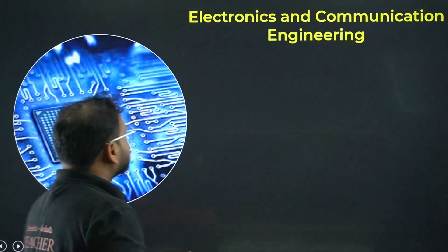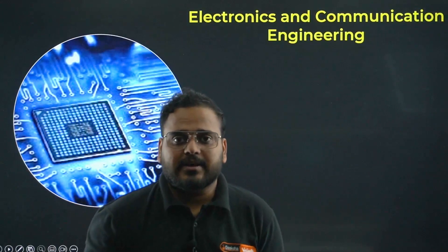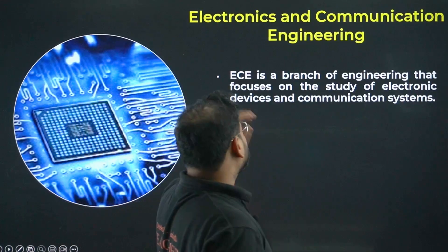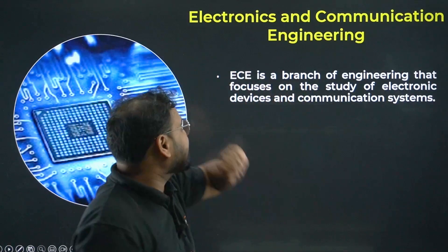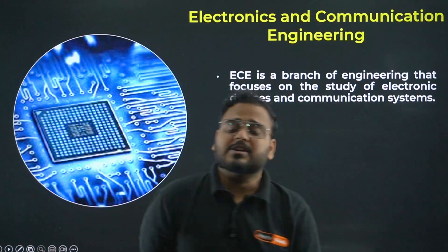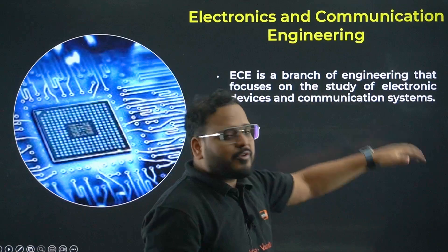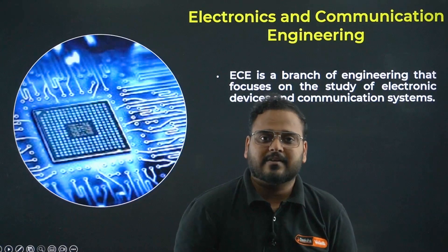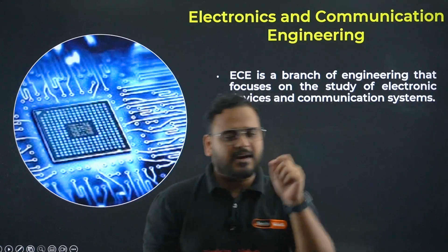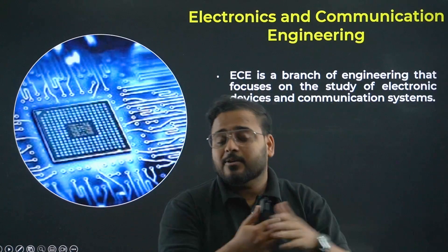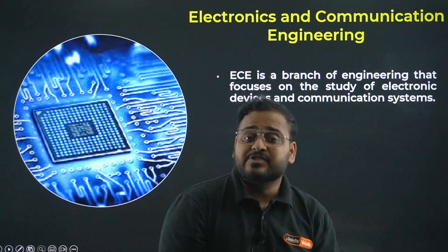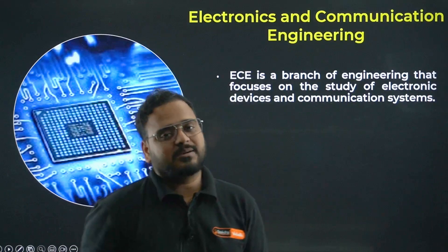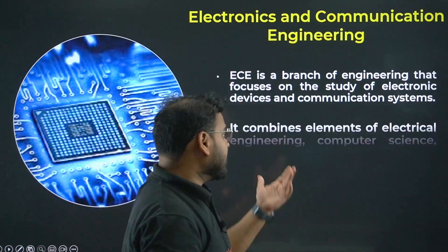Let's define the stream itself first. Electronics and Communication Engineering is a branch of engineering that focuses on the study of electronic devices and communication systems. As the name suggests, it covers electronic devices — for example, smartphones, smartwatches, smart rings — and their application across industries. It can be used in defense, in the healthcare industry, and various other industries where we use electronic items. Communication systems are also a major part of the modern world.